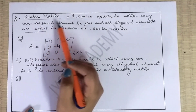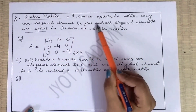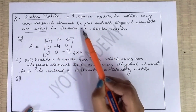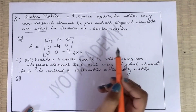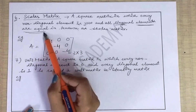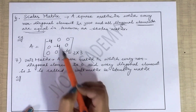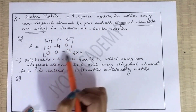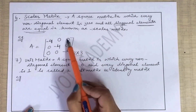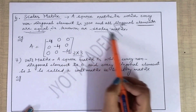Next, scalar matrix. A square matrix in which every non-diagonal element is zero and all diagonal elements are equal is known as a scalar matrix. Yeh bhi diagonal matrix ki tarah hi hai — bas ismein ek cheez ka difference hai: jitne bhi aapke diagonal elements hain, wo equal hone chahiye. For example, agar aapne -4 liya hai, toh sare diagonal elements -4 hain — toh yeh scalar matrix kehlayegi. Non-diagonal elements zero hain, and all diagonal elements same hain.